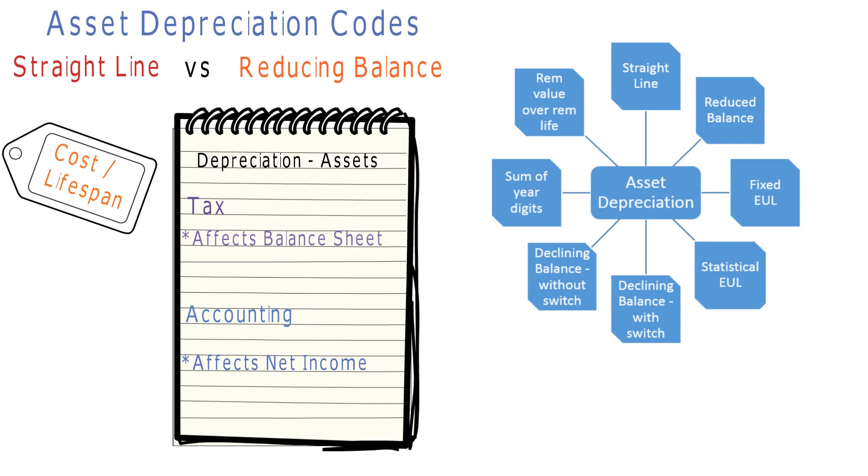CISPRO allows different depreciation types or methods to be applied to assets, such as Straight Line, Reduced Balance, Fixed EUL, Statistical EUL, Declining Balance with Switch, Declining Balance without Switch, Sum of Year Digits, and Remaining Value over Remaining Life.